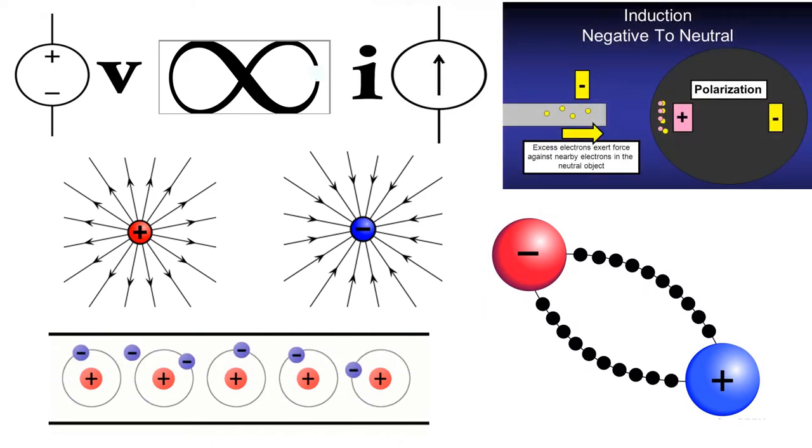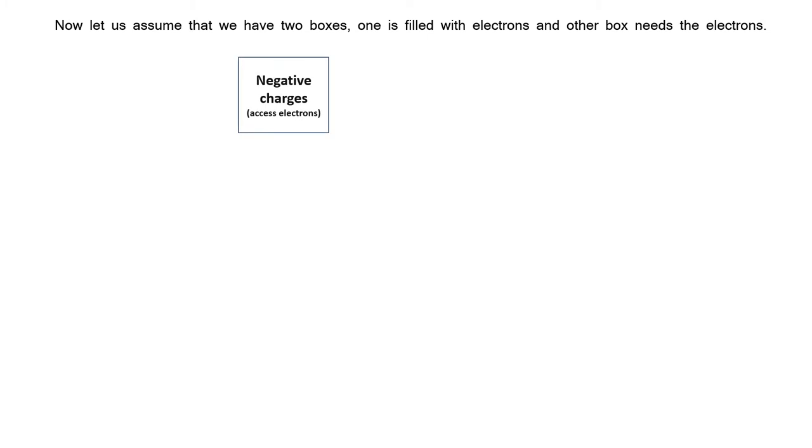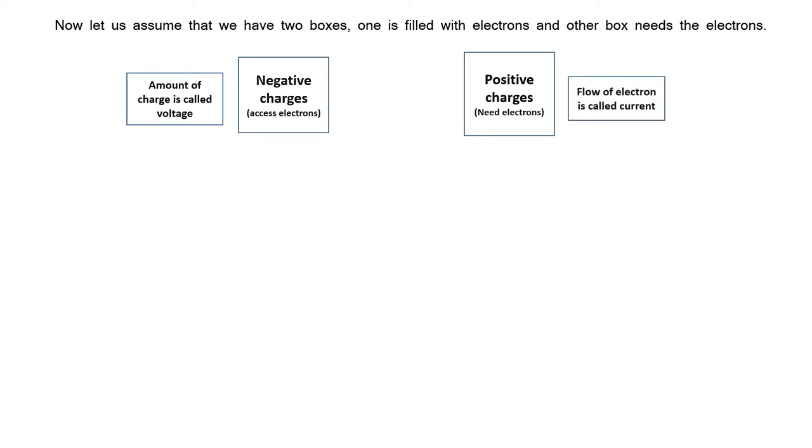The place where we have excess number of electrons become negatively charged, and the place where there is lack of electrons become positively charged. Now, let us assume that we have two boxes. One is filled with electrons, and the second box needs the electrons. The amount of electron in a box will define its voltage, and the flow of electrons from one box to another will define the current. Higher the voltage, higher will be the current.